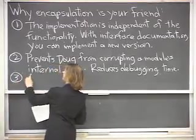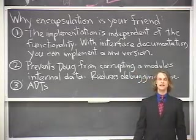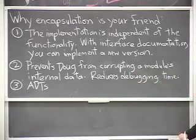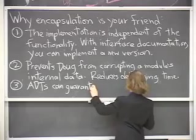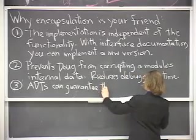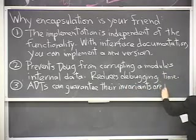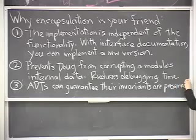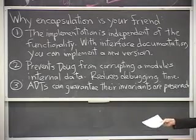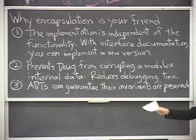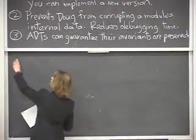A third one, abstract data types have invariants. Well, encapsulation means that ADTs have the power to ensure that their invariants are enforced. So, for instance, if you want to create the invariant that your prev-pointers agree with your next pointers, then you can do that in your lists.